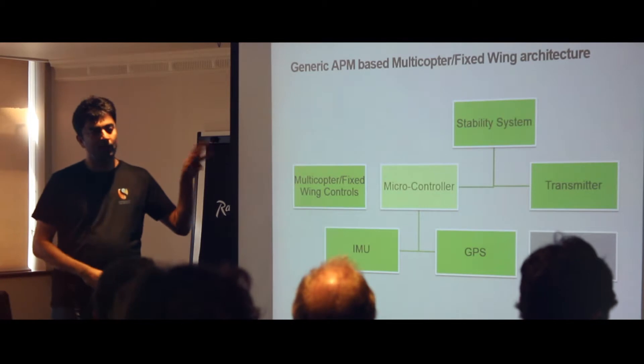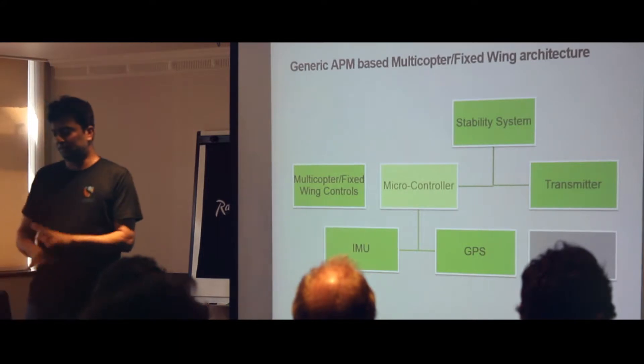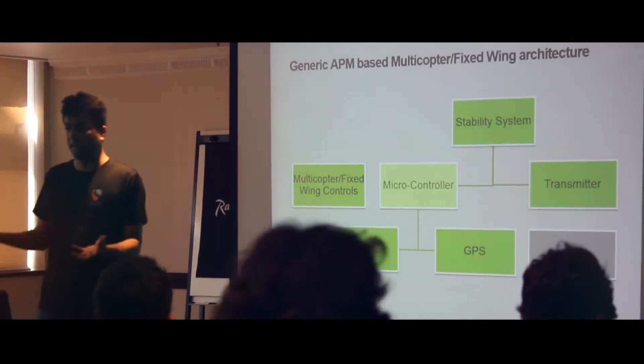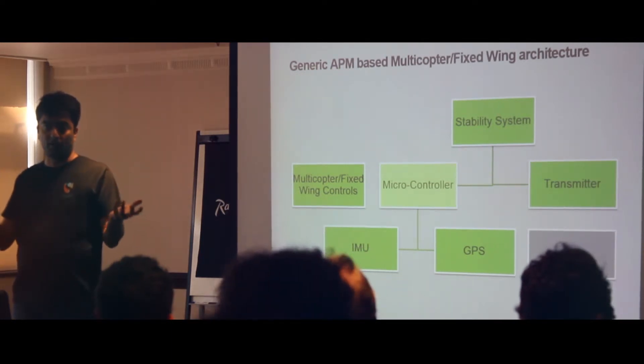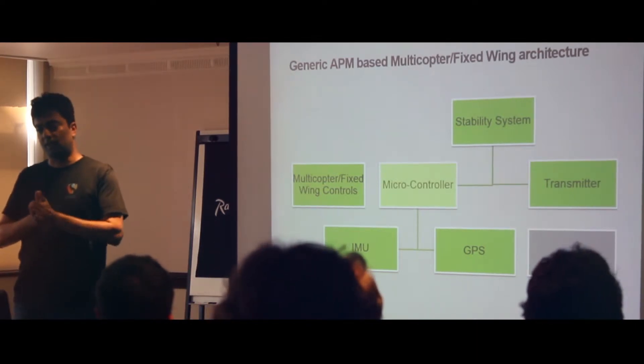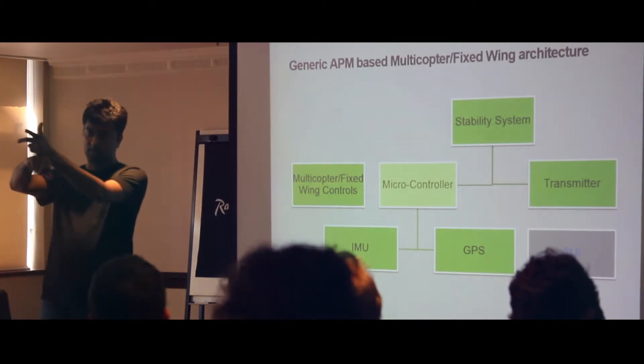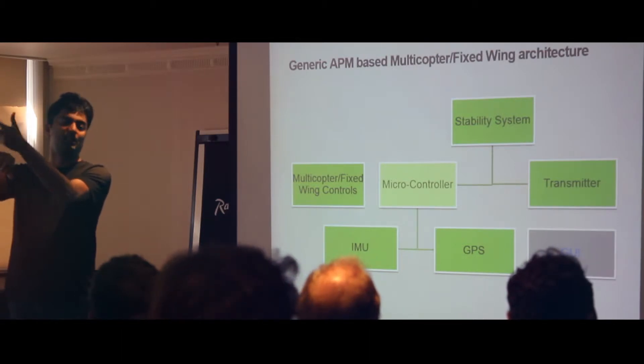So this is a very simple block diagram kind of describing how a normal flight controller works. And even though the talk is more or less aimed towards multicopter, meaning things with multiple propellers, you can actually have a fixed wing version. So essentially, you have a wing and you control the three or four channels however many channels you want.